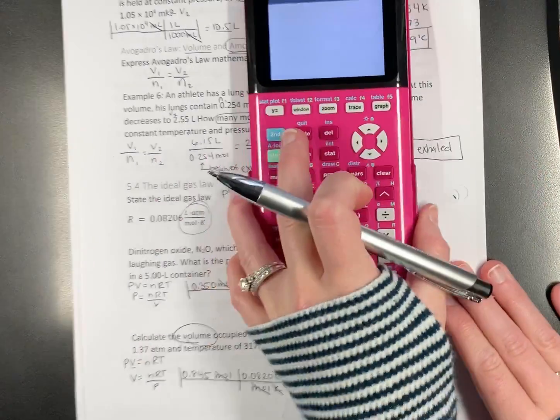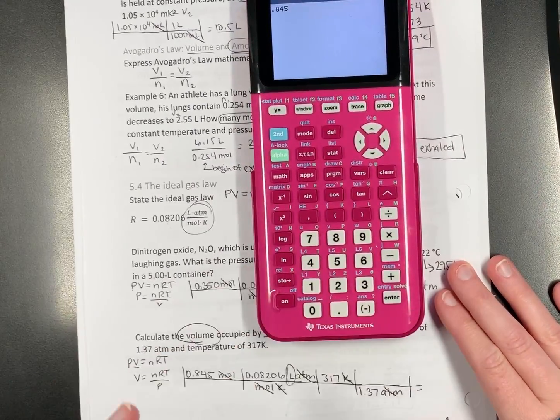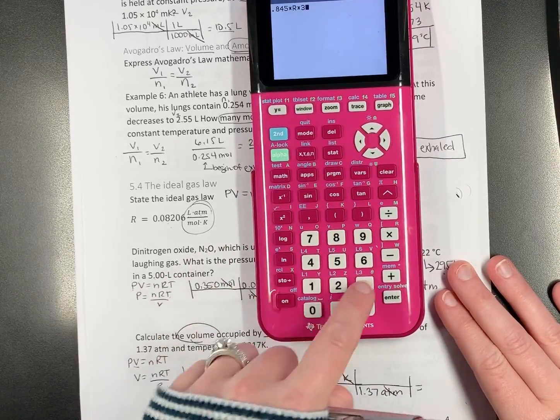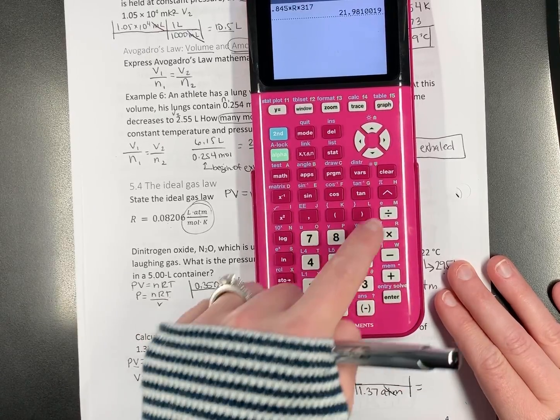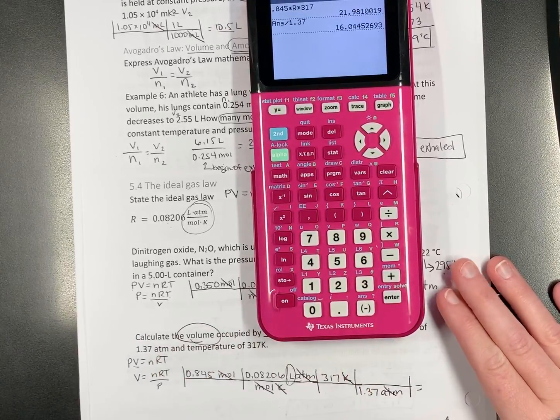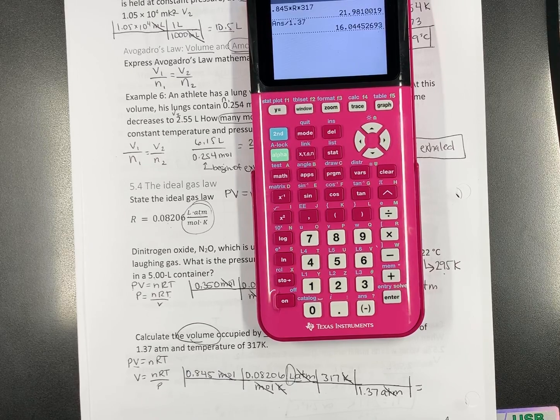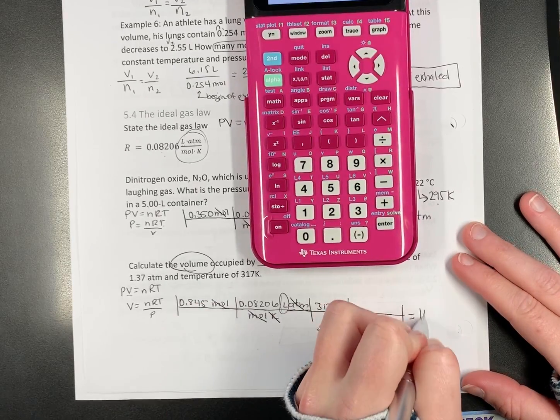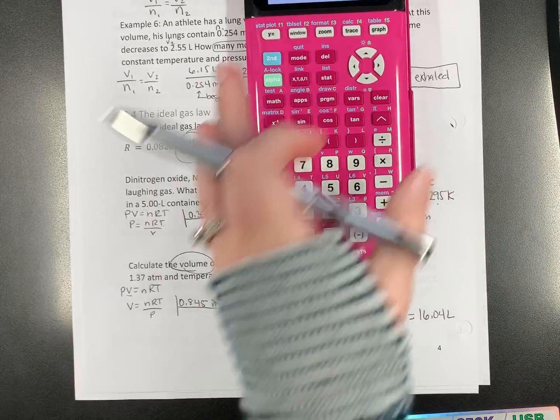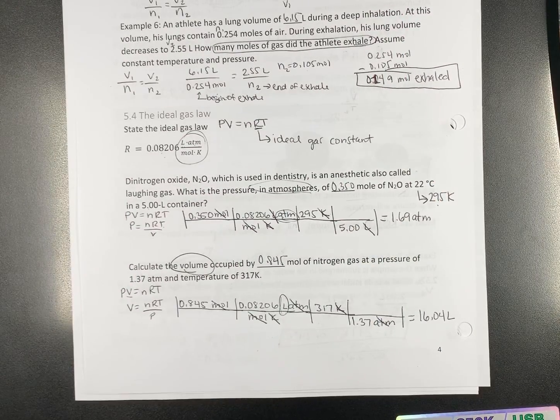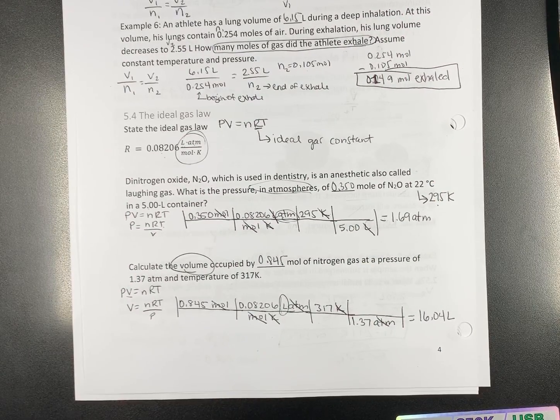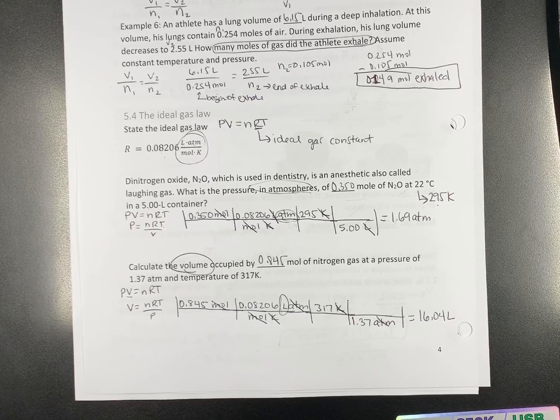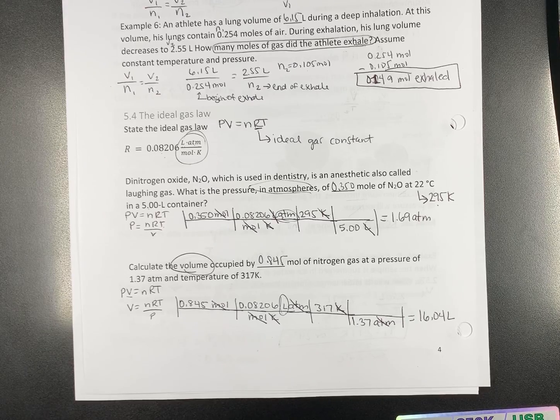So, 0.845 times R times 317 divided by 1.37. 16.04. Now, I'm going to show you how I like to work these problems.